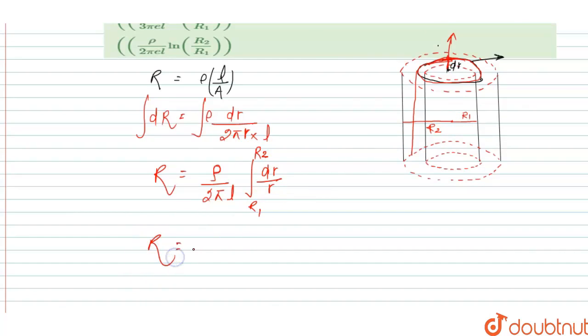Then R is equal to rho over 2 pi L, and integration of 1 by R is equal to ln R, and the limit is R1 and R2.